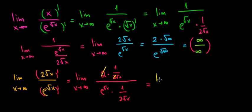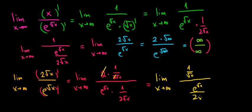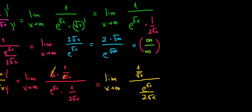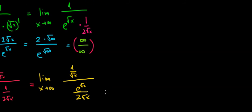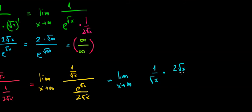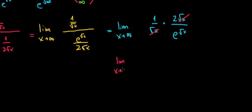The 2 and 2 cancel out. We have the limit as x approaches infinity of 1 over square root of x, divided by e to the power square root of x over 2 square root of x. Dividing this fraction means multiplying by the inverse: 1 over square root of x times 2 square root of x over e to the power square root of x. The square root of x terms cancel, leaving the limit as x approaches infinity of 2 divided by e to the power square root of x.